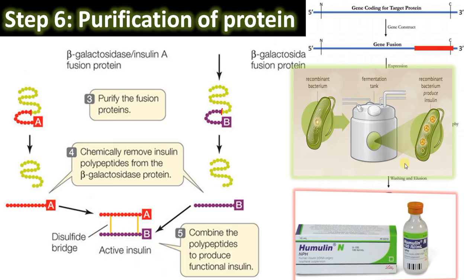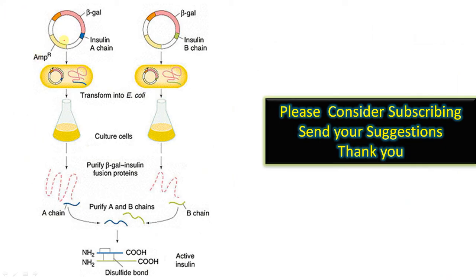In large fermentation tanks, these protein chains are produced, further purified, and then marketed as humulin. This recombinant insulin was first developed by Genentech, a company located in the USA.